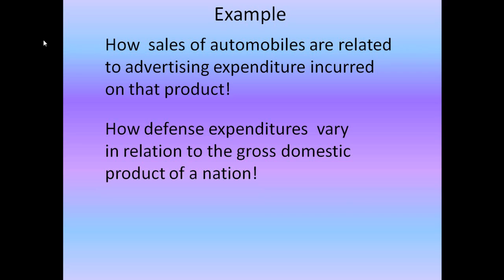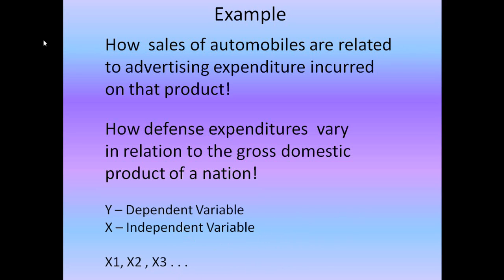In notational terms, Y is always represented as the dependent variable and X is always represented as the independent variable. And in case we have more than one independent variable then we label them as X1, X2, X3 and so on.